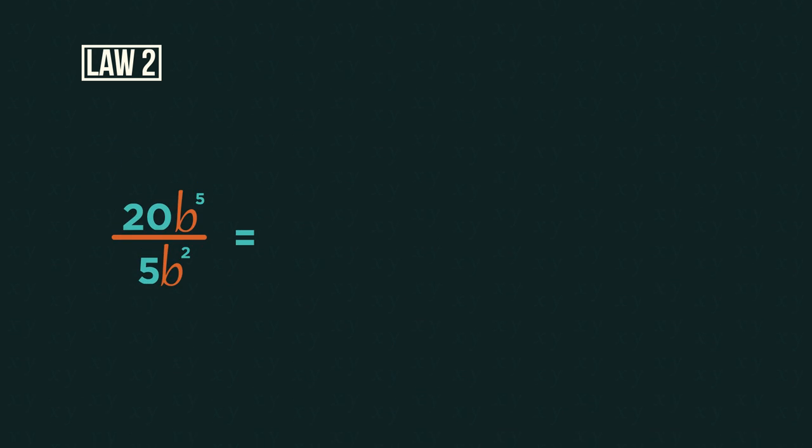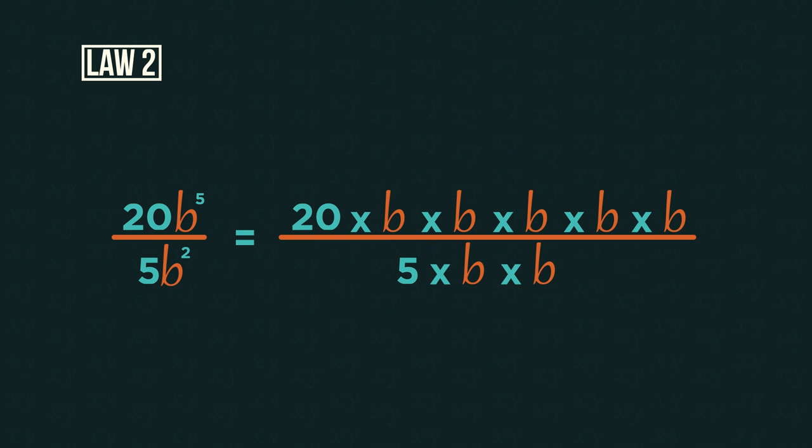This is because if I wrote the equation out fully, it would be the same as writing this. Just as you do when you simplify fractions, we can cancel down our numbers and our letters. So we cancel the twenty and the five to become four and we start by canceling out the b's. So to divide indices, we divide the numbers and we subtract the powers.